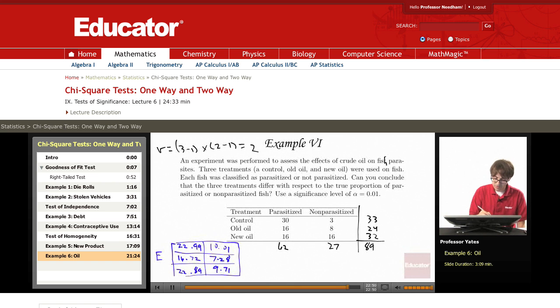So we have enough now to do our chi-squared. I'm taking thirty minus what we would expect, twenty-two point nine nine, we're squaring that, divide by twenty-two point nine nine. Plus three minus ten point zero one squared, divide by ten point zero one.